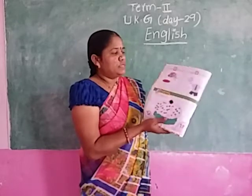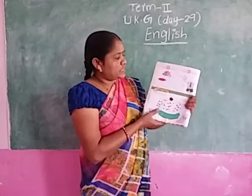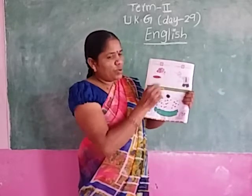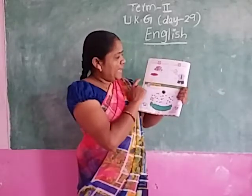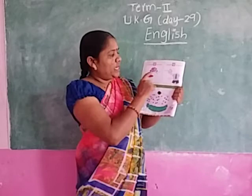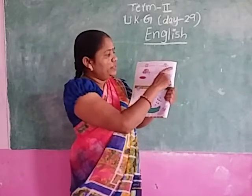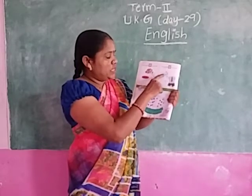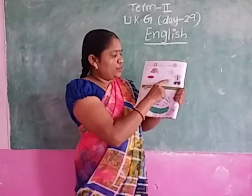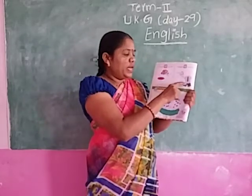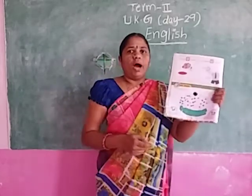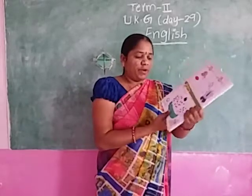Next, vowel O words: R-O-S-E. O-V-A-L. Vowel U words: T-U-B-E. U-N-I-F-O-R-M. Uniform.